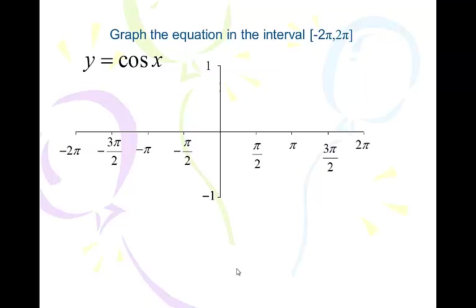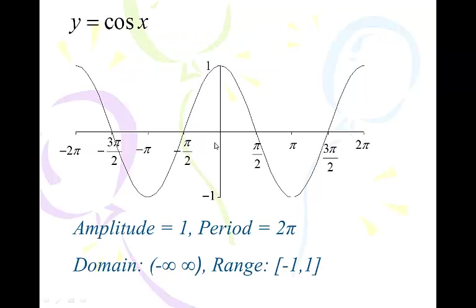Let's move on to the cosine curve. We graph the equation between negative 2π and 2π again — same layout for the x and y-axis. It's a slightly different graph than the sine curve; it's really just moved over 90 degrees. Plug and chug: put 0 in for x, and cosine of 0 is 1. Put π/2 in — cosine of π/2 is 0. The cosine of π is negative 1, cosine of 3π/2 is 0, and cosine of 2π is 1. There's one full cycle right there.